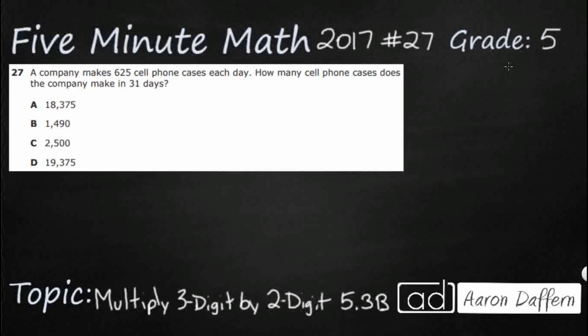So we have 625 cell phone cases being made each day, so that each day gives us a clue for multiplication because we're going to have equal groups, and then we're going to make 625 each day for a total of 31 days. So let's see what happens when we multiply 625 and 31.